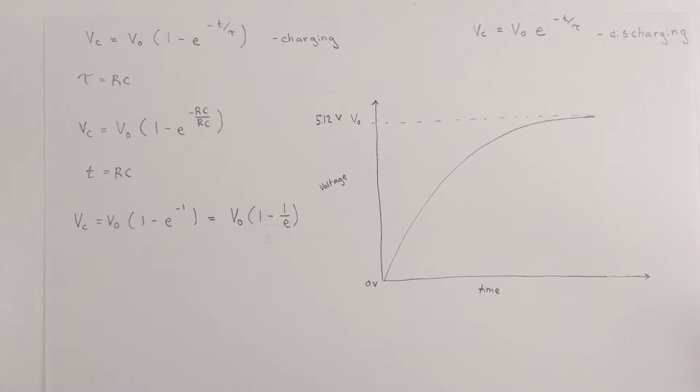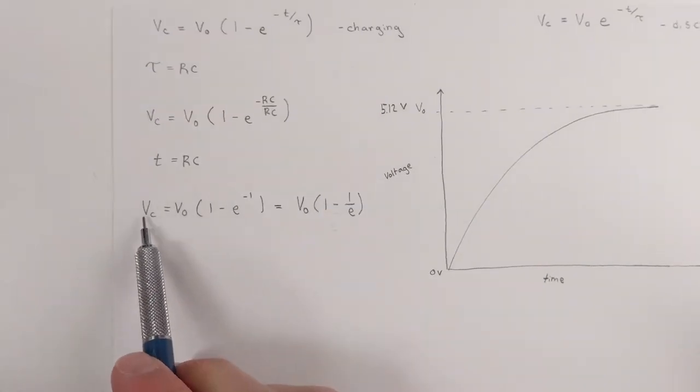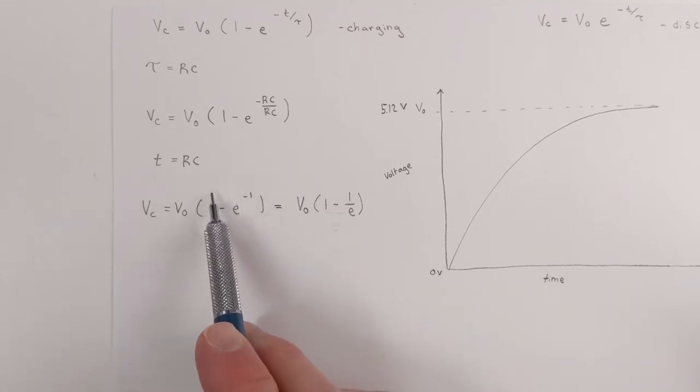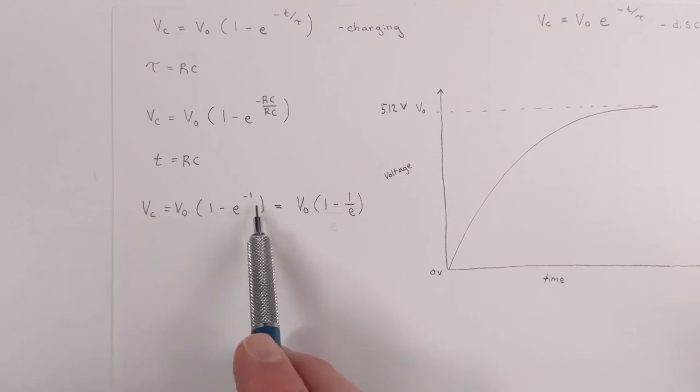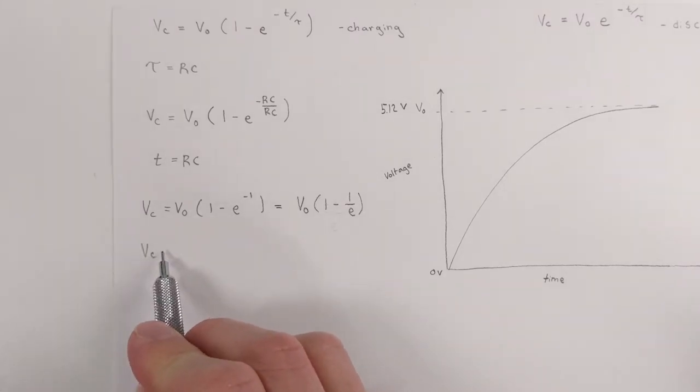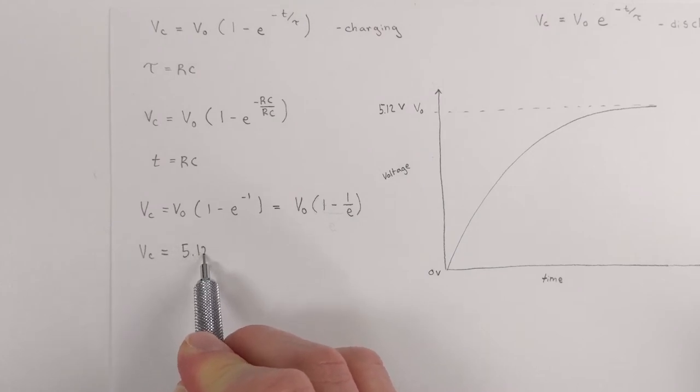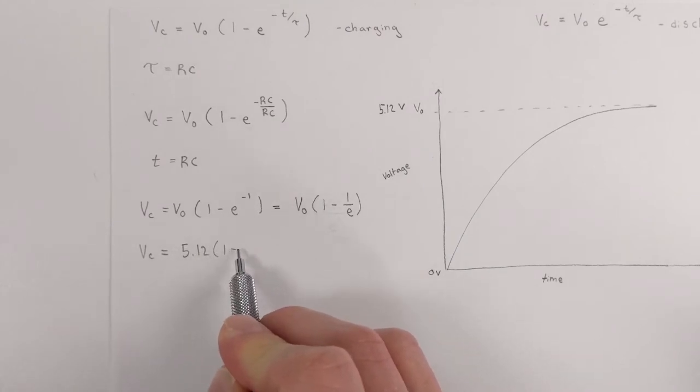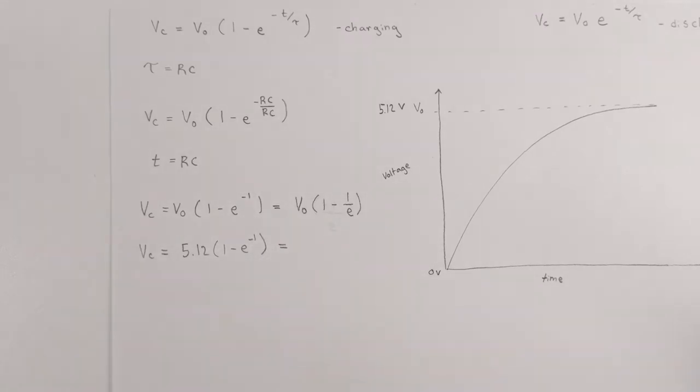And this is also equal to V sub zero of 1 minus 1 over E. But you can still work with that. And so we want to figure out the voltage of the capacitor when it is at this time. So what we'll get is V sub c is equal to our voltage here, 5.12 volts times 1 minus E to the negative first.